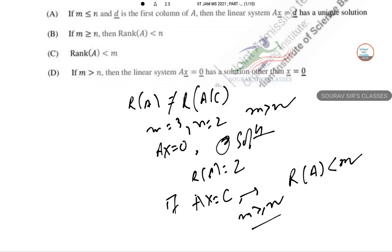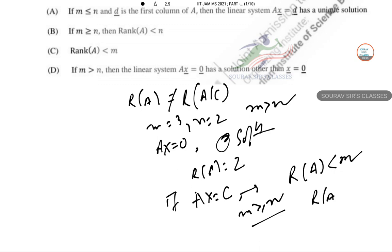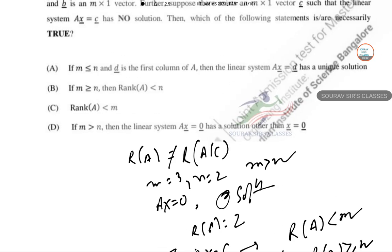If M greater than equal to N, then in this case rank of A has to be greater than equal to N. So combining this, if you take a look into the options, then the answer is only C.